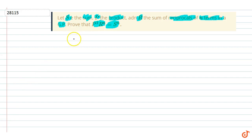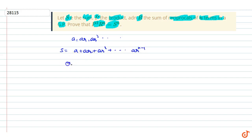Our GP is equal to a, r to the power n minus 1, that means a into 1, r to the power n minus 1, into r upon r to the power 1. Here is our S — equation number 1.